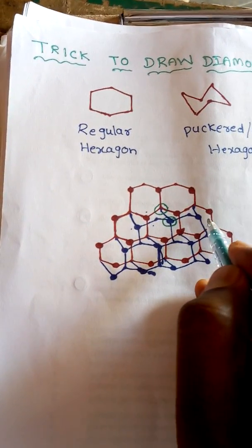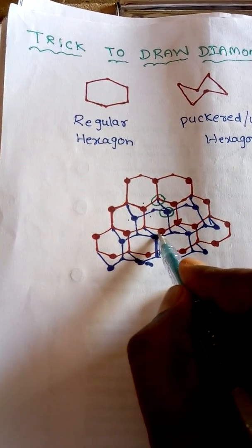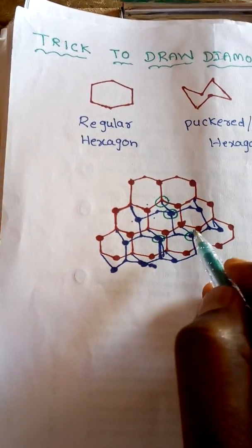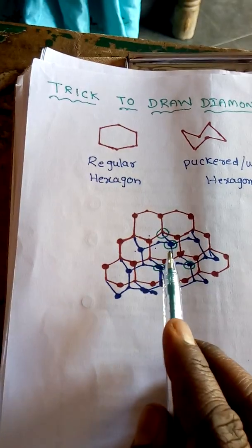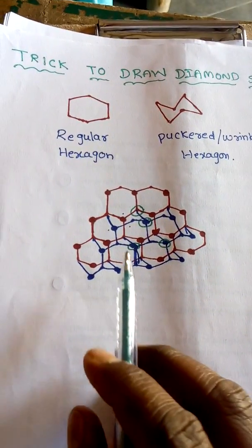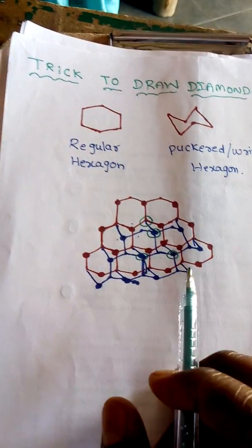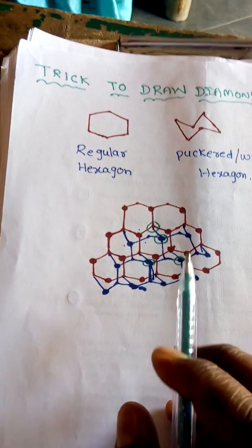tetrahedron structure is computed. So like that if we continue this one we have the complete diamond structure. So we know very well that diamond is a three-dimensional polymeric structure so like that we can easily draw the structure of diamond.